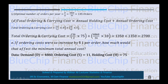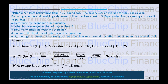Compute the total cost of ordering and carrying flour. Total ordering and carrying cost = (Q/2)×H + (D/Q)×S = (36/2)×0.75 + (4,860/36)×10 = $2,700.